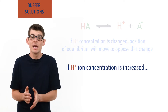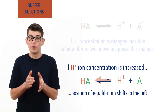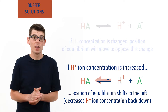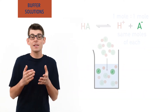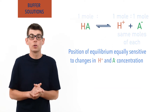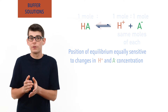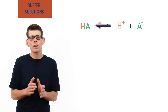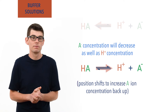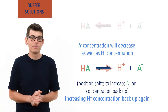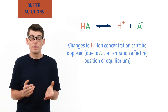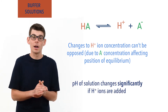For example, if extra H⁺ ions were added, it would shift to the left, favouring the reverse reaction of A⁻ combining with H⁺ to decrease the H⁺ ion concentration back down again. The problem is that in the initial equilibrium mixture, the A⁻ concentration is actually the same as the H⁺ ion concentration. This means the position of equilibrium is equally sensitive to changes in both A⁻ and H⁺ ion concentration. If equilibrium shifts and H⁺ combines with A⁻ to form more HA, the A⁻ concentration decreases, and the equilibrium has to shift back again, effectively increasing the H⁺ ion concentration back up. As a result, changes in H⁺ ion concentration can't really be opposed, and the pH changes significantly if H⁺ ions are added or removed.